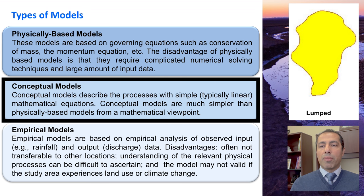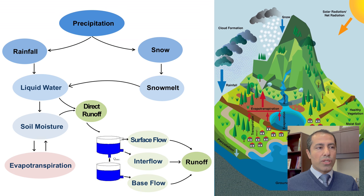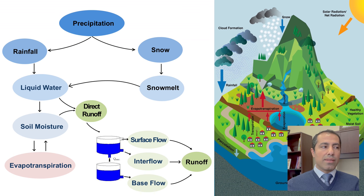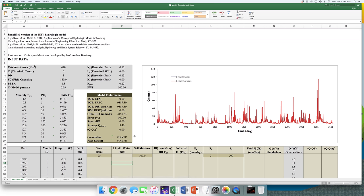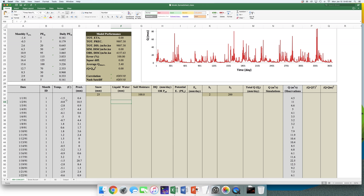In this lecture we develop a lumped conceptual model. This is our model structure. We start with precipitation, decompose it to rainfall and snow, calculate snow melt and liquid water, and other relevant variables like soil moisture and evapotranspiration to calculate runoff. We use an Excel spreadsheet, start with some input data, and develop the model step by step. Download this Excel spreadsheet from my website and follow all the steps with me.